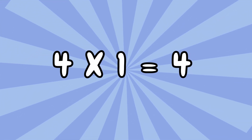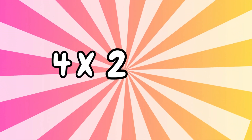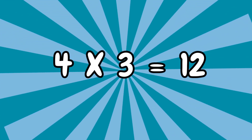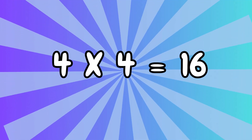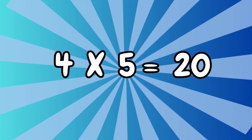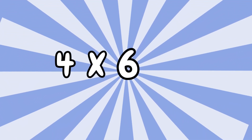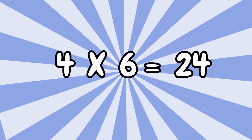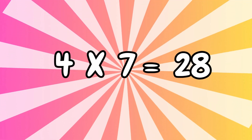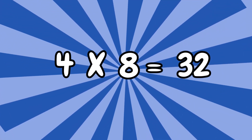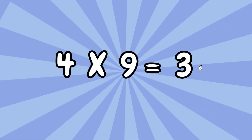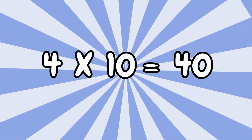Four ones are four. Four twos are eight. Four threes are twelve. Four fours are sixteen. Four fives are twenty. Four sixes are twenty-four. Four sevens are twenty-eight. Four eights are thirty-two. Four nines are thirty-six. Four tens are forty.